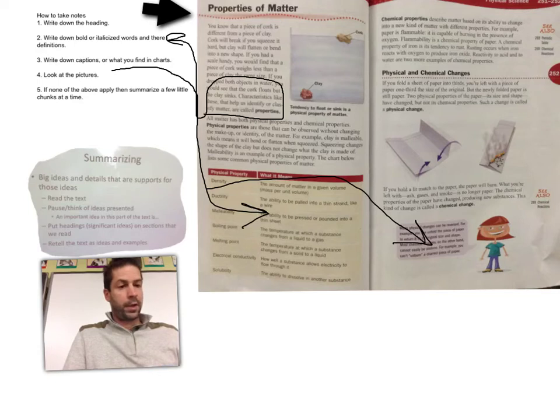And on the other page, I can see that physical changes can be reversed. For example, you can unfold a piece of paper and return it to its original size and shape. But most chemical changes, on the other hand, cannot be reversed. For example, you can't unburn a charred piece of paper.